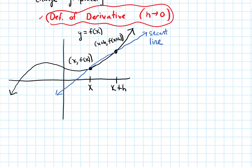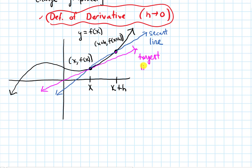Our idea from before was: if I wanted to get the slope of the tangent line, the secant line isn't perfect — it's just an approximation. The tangent line needs to represent how steep the graph is right at x. So our idea is to move the point x plus h closer and closer to x, and as we do that it gives us a line matching the steepness of the graph right at x. This is the tangent line. Now let's write a formula for its slope — this is what's known as the definition of the derivative.